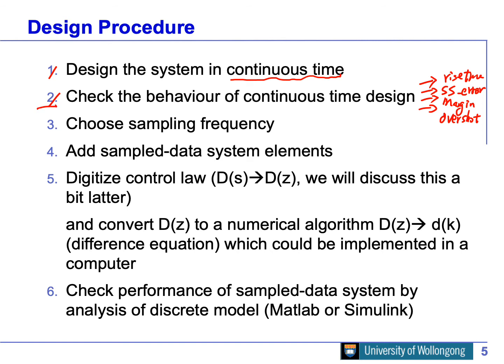The next step is to consider what sampling frequency to use, based on the bandwidth of your continuous-time system. That bandwidth can be found from the Bode diagram — you can get the open-loop or closed-loop bandwidth. From there you choose the sampling frequency and add two components to the system: the anti-alias filter and the zero-order hold.